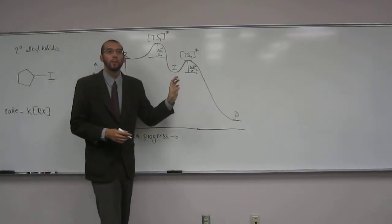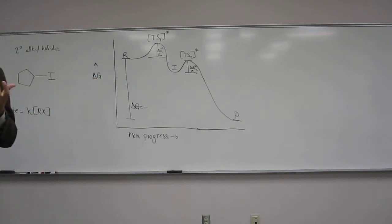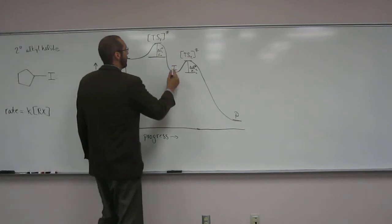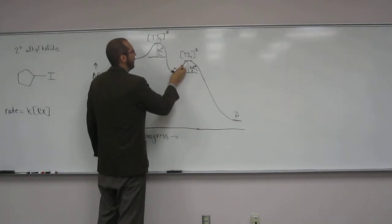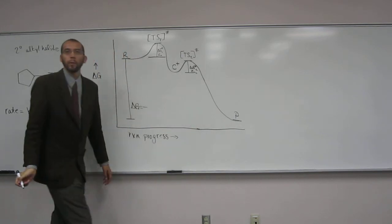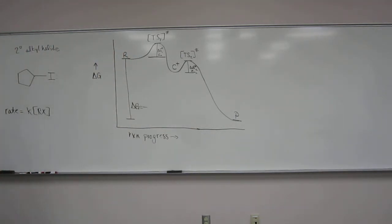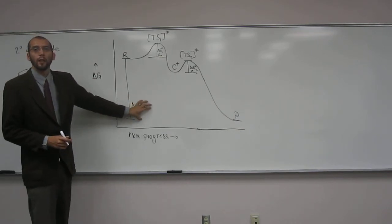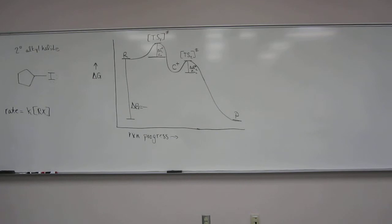In SN1 reactions, what is the identity of the intermediate? Carbocation. It's a carbocation. So, let's just say, the intermediate, we got a carbocation. So, is this reaction going to be endergonic or exergonic? Exergonic. Exergonic. Right? Why is that? Yeah. Because, delta G is negative. Right?